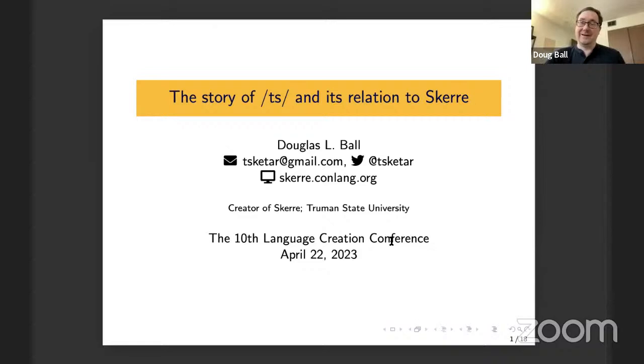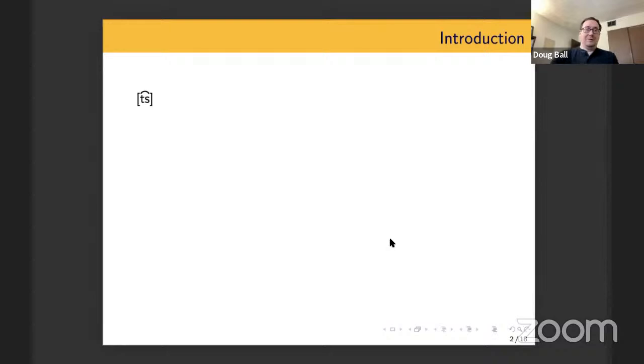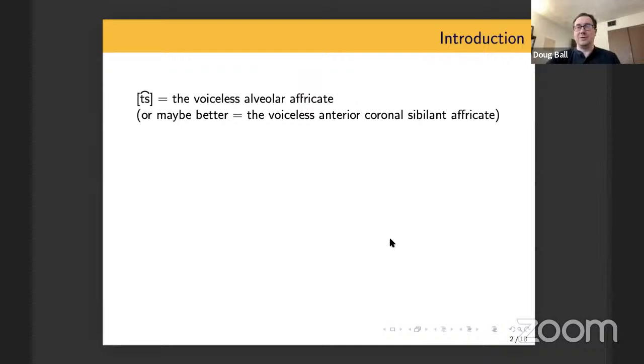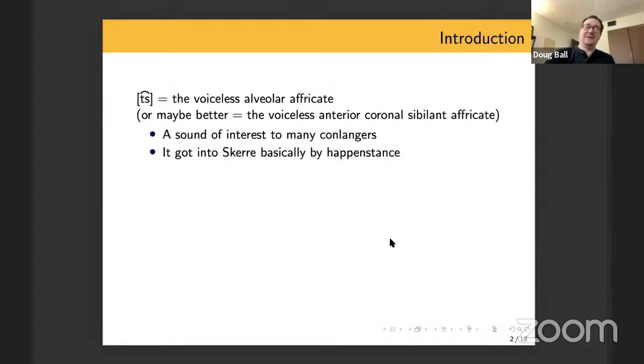I just pronounce it Scare as if it was an English word, but we're looking concretely at the sounds, which I'll actually refer to as TS for most of this talk, but we could refer to it as the voiceless alveolar affricate. We really want to get technical about it. We might call it the voiceless anterior coronal sibilant affricate. But I think this is a sound of interest for many conlangers. They either include it or maybe have at least thought about including it.